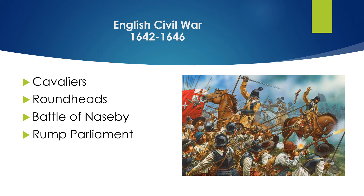At this point, Charles was arrested. Parliament was purged of Charles's supporters, leaving only those opposed to the King — called the Rump Parliament. They voted after the trial of Charles in 1648 to execute him. In 1649, Charles I was executed, proving to the English people that even the king was not above the law.